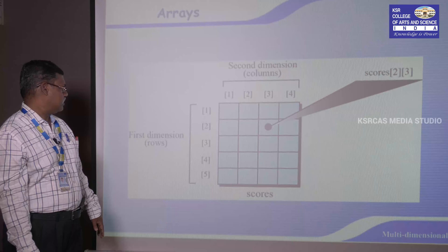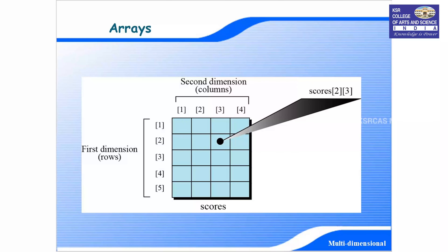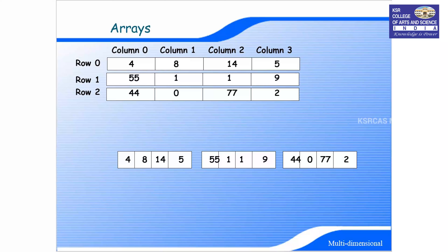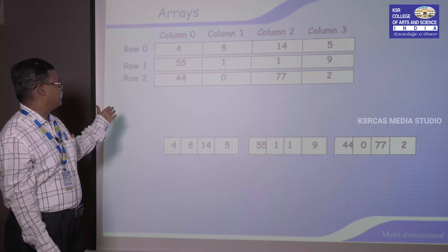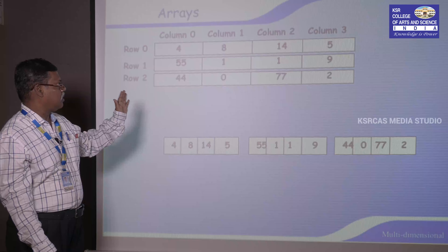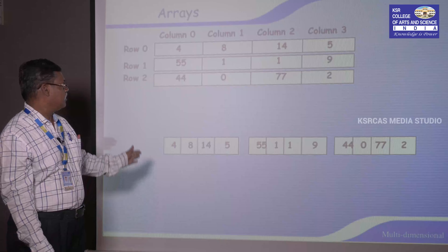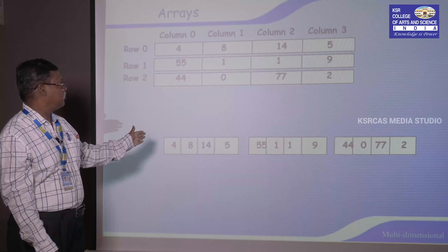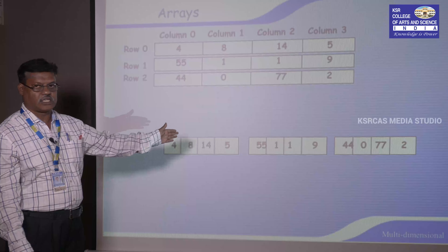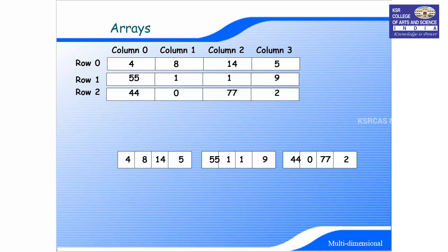This is the representation of the two-dimensional Array as discussed in the previous slide. Here we have three rows and four columns. In row major order, we store the first row: 4, 8, 14, 5; then the second row: 55, 1, 1, 9; and finally: 4, 0, 7, 7, and 2.